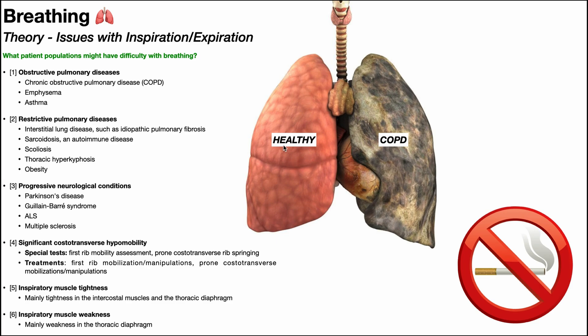You can see here the right lung is a healthy lung — the person likely has never smoked. The left lung is a diseased lung, a COPD lung caused by excessive smoking. That smoking causes damage to the lung all the way down to the cellular level, to the alveoli, and it really makes it difficult for these people to exhale. So generally speaking, obstructive diseases have more of an issue with exhalation or expiration than with inhalation.